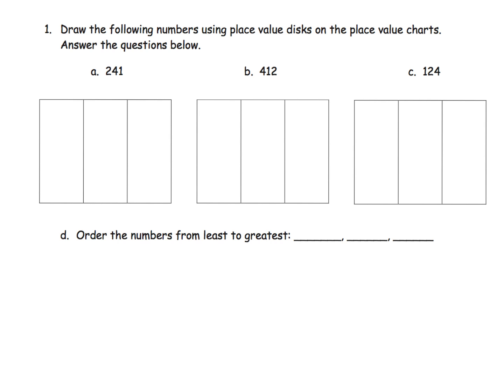So here, we're going to go back to that place value disks, because that's what Eureka Math is asking us to do. We can see that we're supposed to start with modeling. And so these are our hundreds, and then we're going to have four tens, and then we're going to have one one. So there's 241.